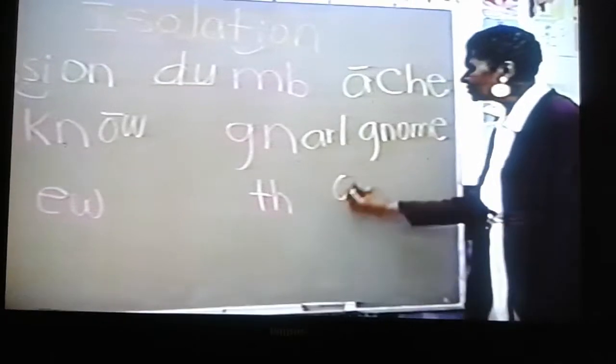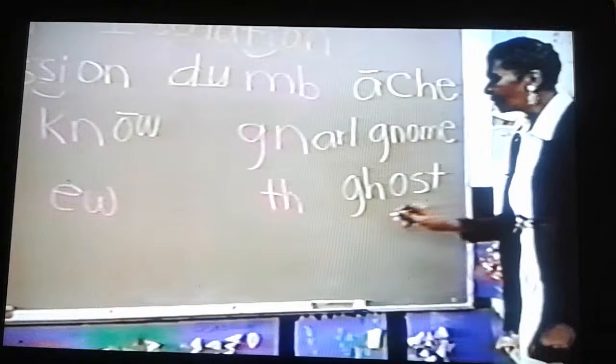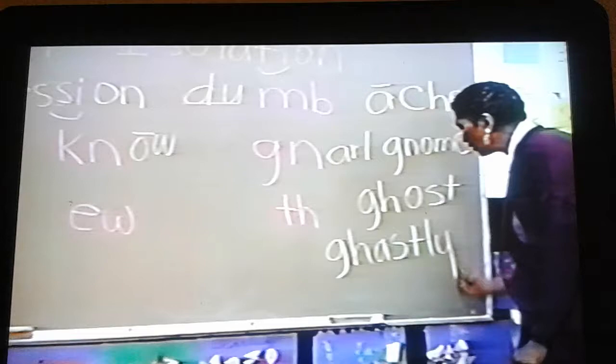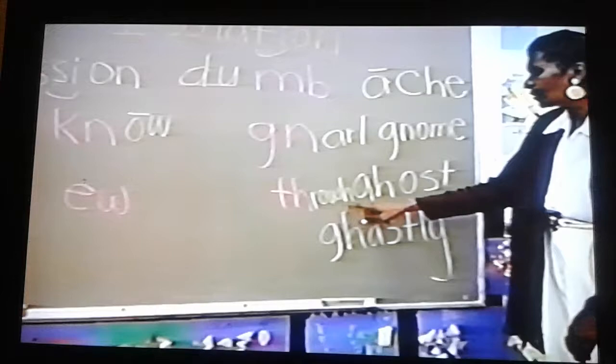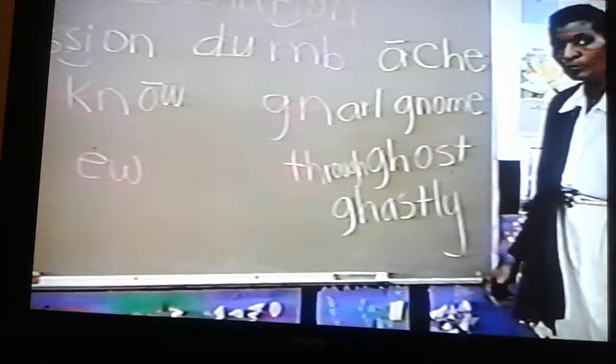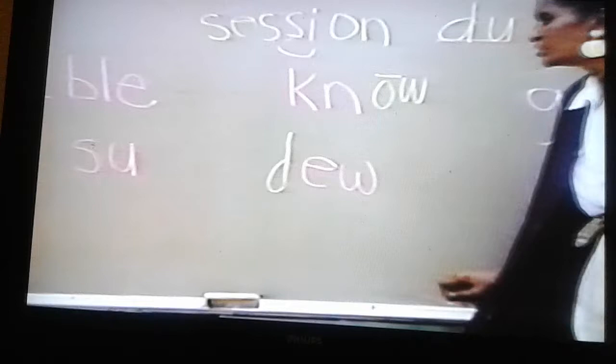Here we have G-H as in ghost. Here we have G-H as in gasoline. Here we have T-H as in through. There we don't hear the O, we don't hear the G, we don't hear the H. We just hear T-H-R-U and through. Here we have E-W as in 'you' and the word is 'do.'